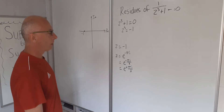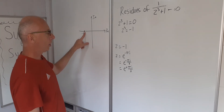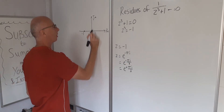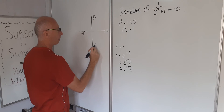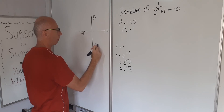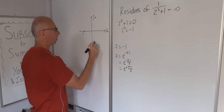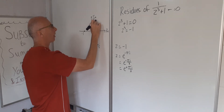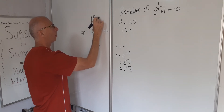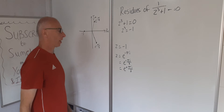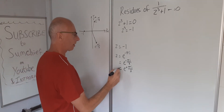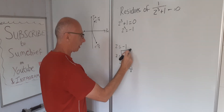So we've found our three singularities. We have one at minus 1, one at e to the minus pi i over 3 — which sits here on the diagram — and one at e to the i pi over 3, located around here. So we've located all three singularities.